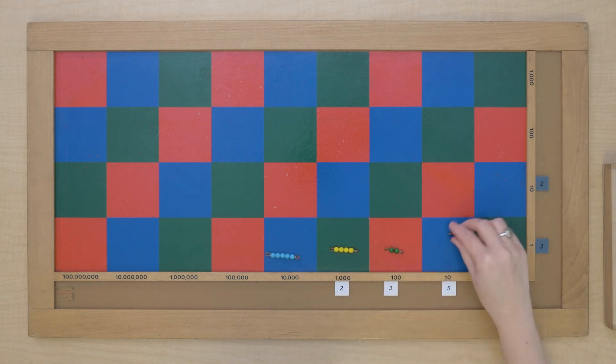Aha! Now I can read this number. So we multiply 2,357 times 23. And the result, the product that we got, is 54,211.